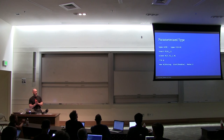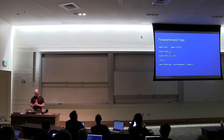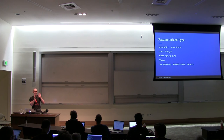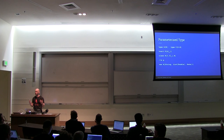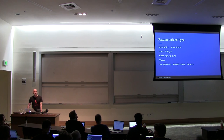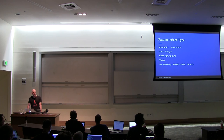Let's begin by taking a look at something called a parameterized type. A parameterized type is also called a type constructor, because it's not actually a type — it's something you have to feed types to in order to construct a type. It's the same as a data constructor, like a constructor in Java or Scala, or like a case class constructor.